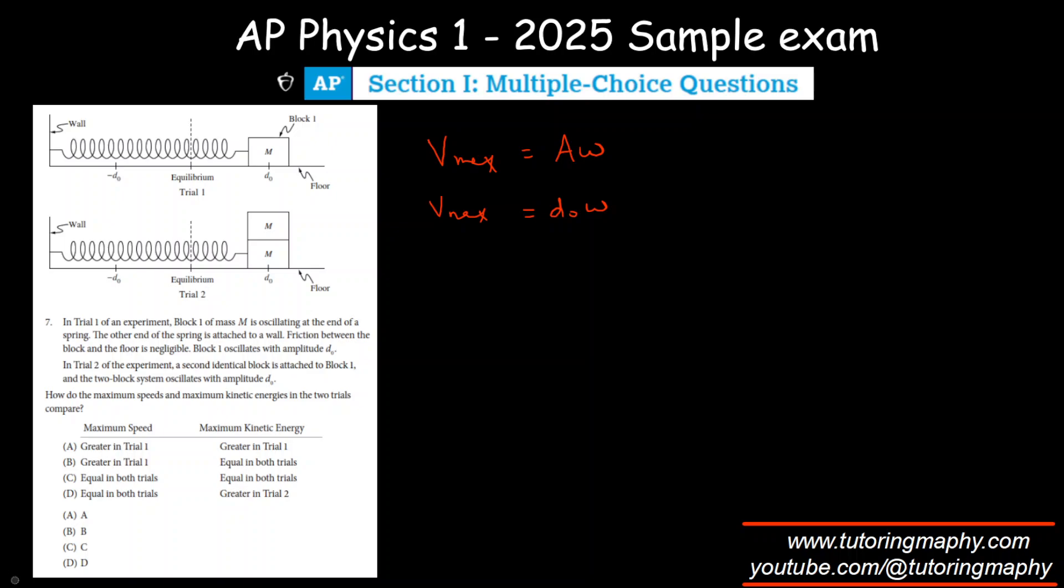And what is the formula for omega? Omega is root K over M, right? So V max in Trial 1 will be D not times the square root of K over M, where K is the spring constant and M is the mass.